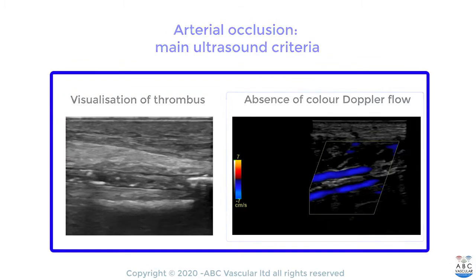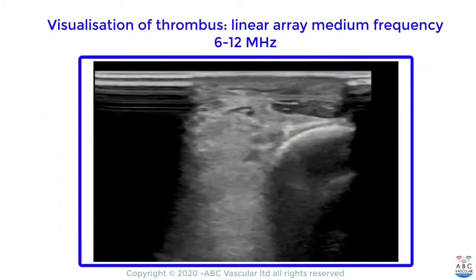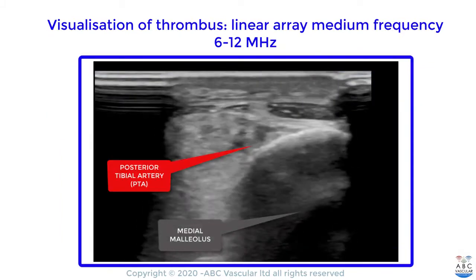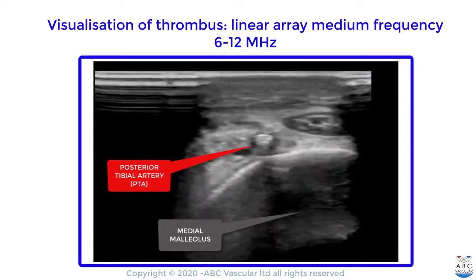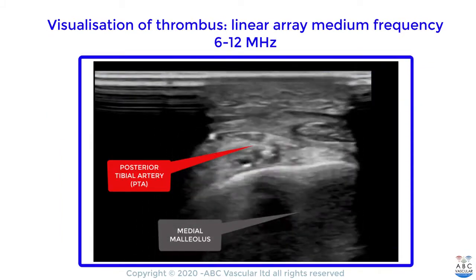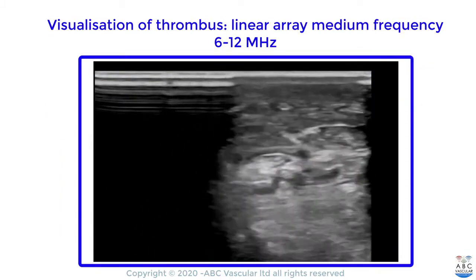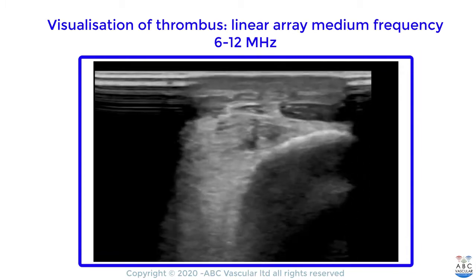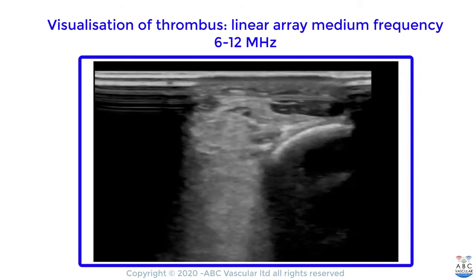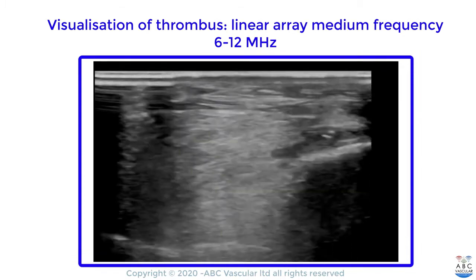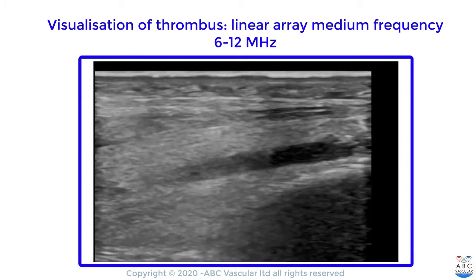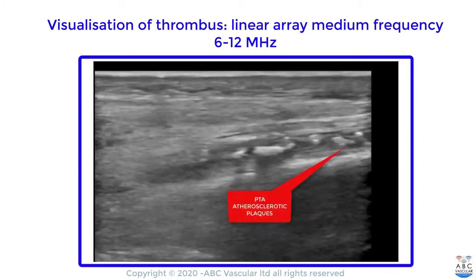The posterior tibial artery is a superficial structure at the level of the medial malleolus. Therefore, we can use a linear array to identify the artery and to visualize the presence of atherosclerotic disease throughout the posterior tibial artery.